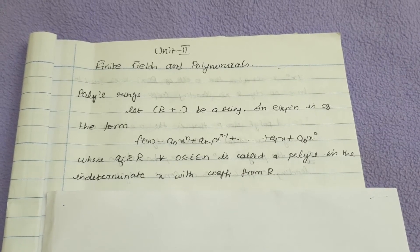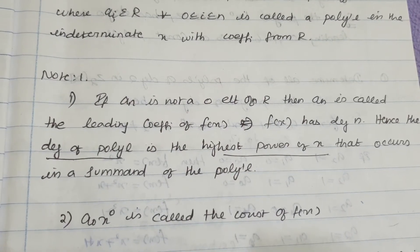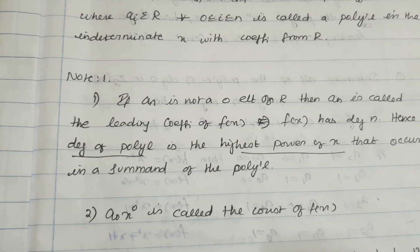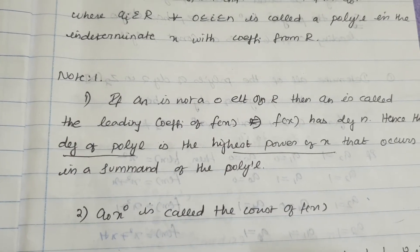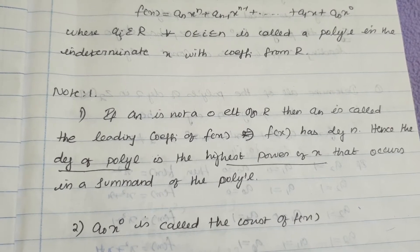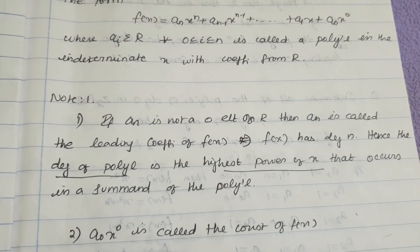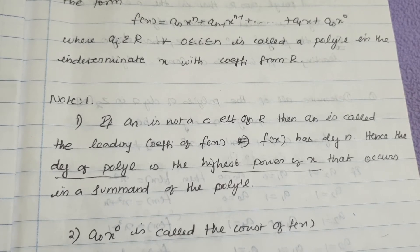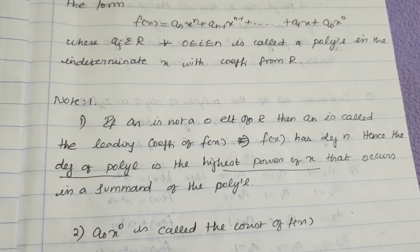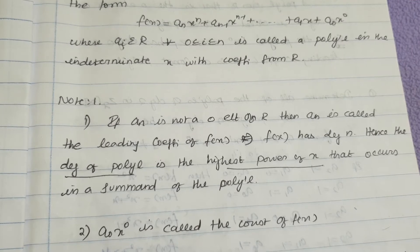This is an nth degree polynomial and a_n is known as the leading coefficient. Now let us see some important points to remember in finite fields and polynomials. If a_n is not the zero element of R, then a_n is called the leading coefficient of f(x), which implies that f(x) has degree n. The degree of a polynomial is the highest power of x that occurs in a summand of the polynomial.